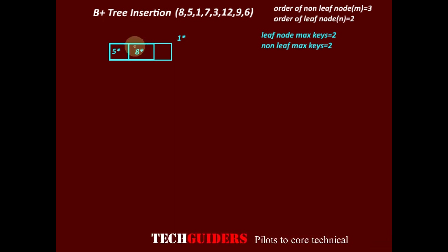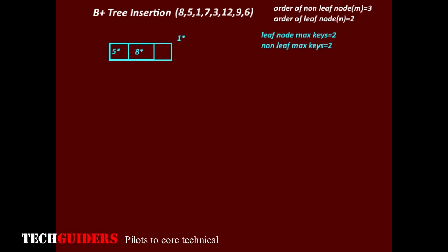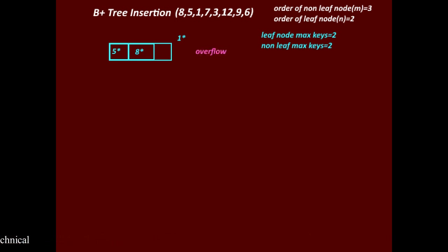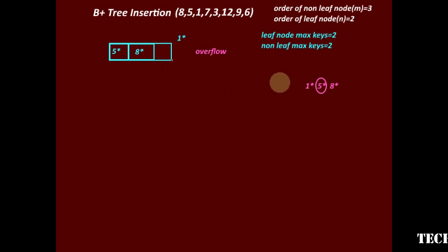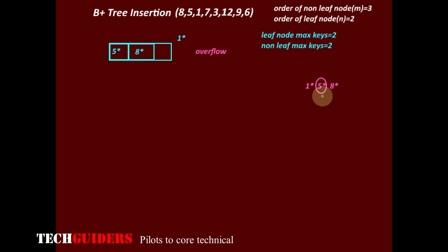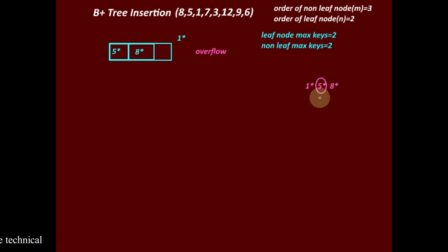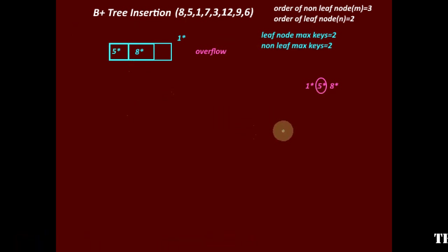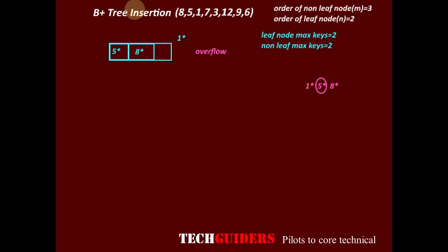If we try to insert a new key-data pointer pair, an overflow will occur since this node is full. To handle the overflow, we consider all the entries of this node including the element we are trying to insert in sorted order, find the mid entry, then push the key corresponding to this mid entry to the parent level and split this node into 2. Since there is no parent level, we must add one level.